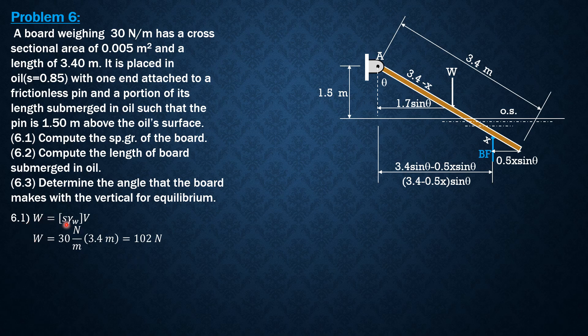102 newtons is specific gravity times 9,810 newtons per cubic meter, specific weight of water. Volume of the board is cross-sectional area 0.005 times length 3.4. From here, we can compute the specific gravity of the board equal to 0.6116.